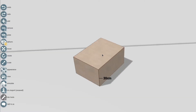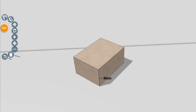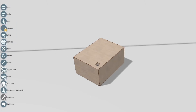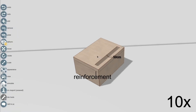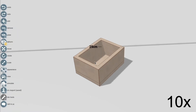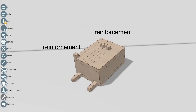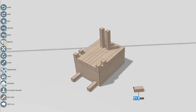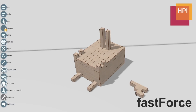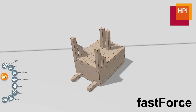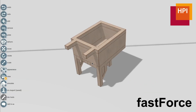FastForce represents structural issues as graph connectivity problems, allowing it to identify and reinforce them in real time. This allows FastForce to run in the background, enabling designers to make bigger and structurally sound models without worrying about the underlying engineering.